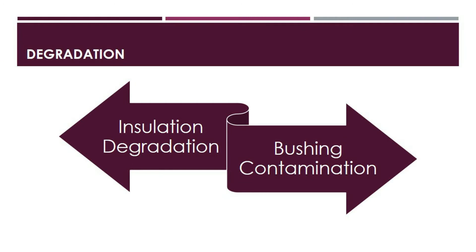Let us first start by understanding what are the modes of degradation for distribution transformers. Distribution transformers are degraded by two key factors: the first one being the degradation of the transformer's solid insulation and insulation oil, and the second one being the contamination of the bushing and its exterior surfaces.